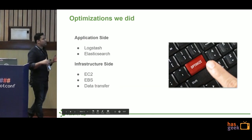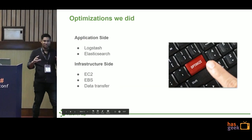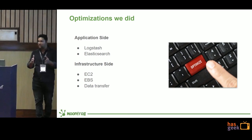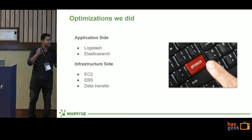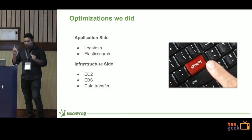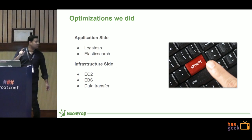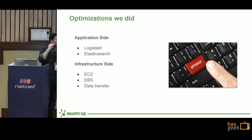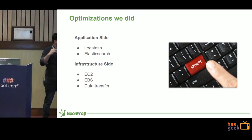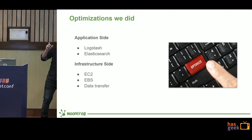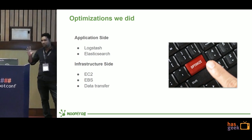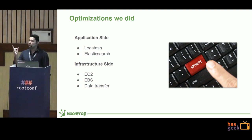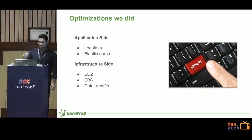Now let's get to the optimizations we have done. We needed optimization on two fronts. The first was the application side — I will talk about optimization for Logstash and Elasticsearch. The second was the infrastructure side — since we are using AWS, we did infrastructure optimization for EC2, EBS, and data transfer.